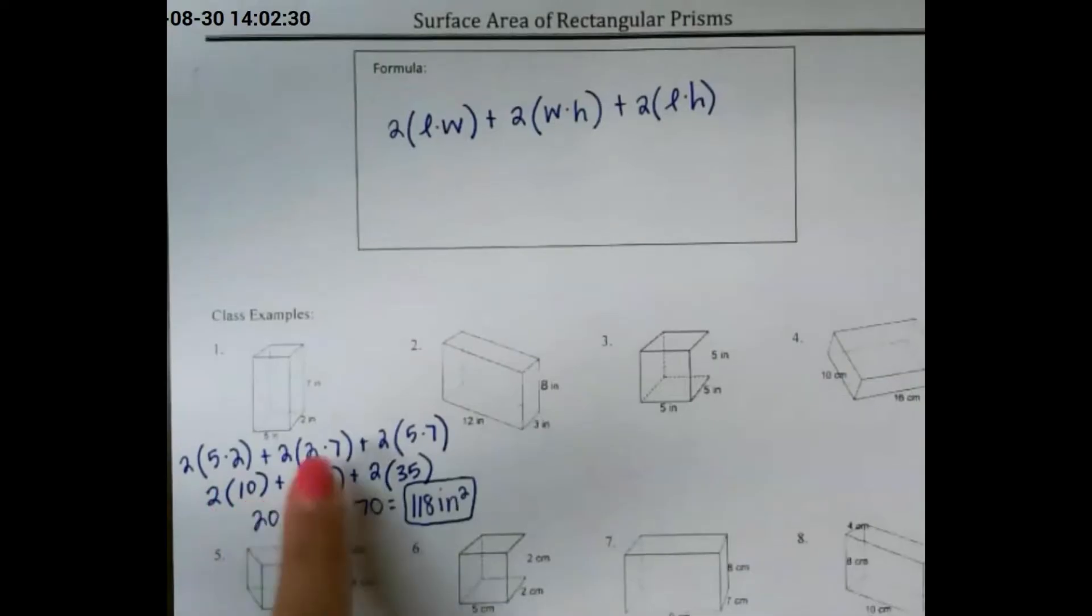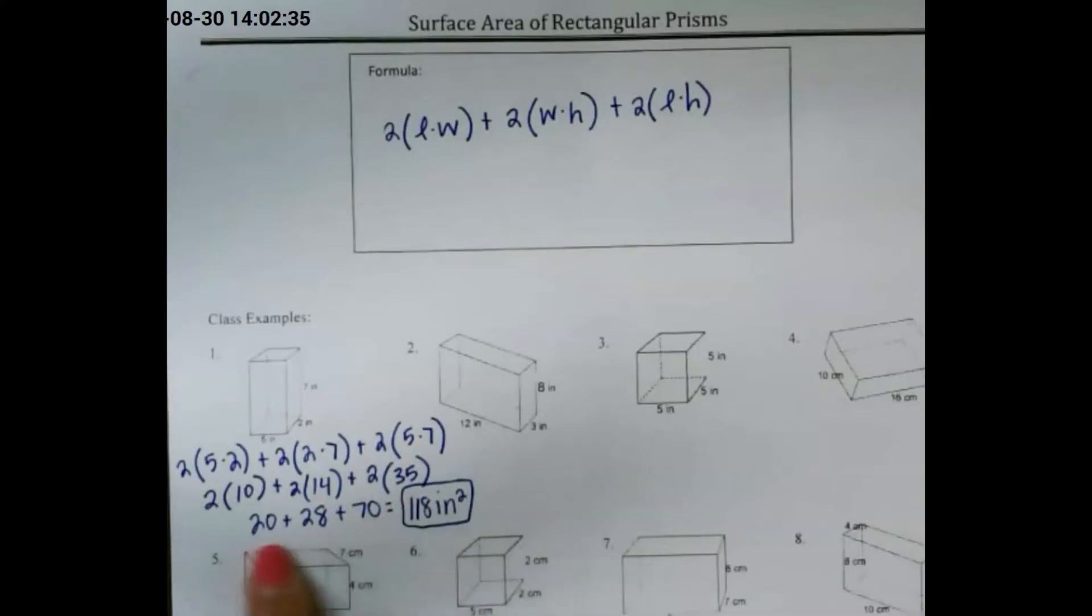So 5 times 2 is 10, 2 times 7 is 14, and 5 times 7 is 35. Add all of those numbers up to get a final surface area of 118 inches squared.